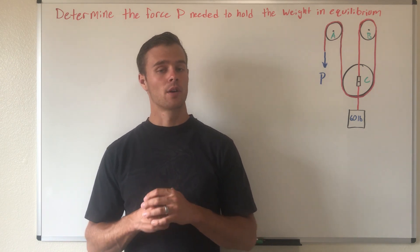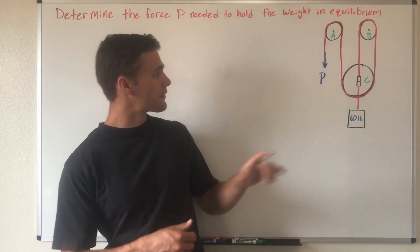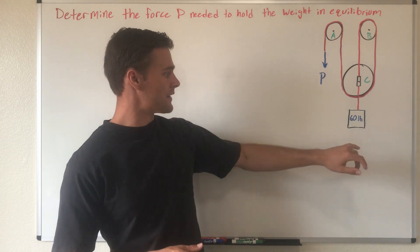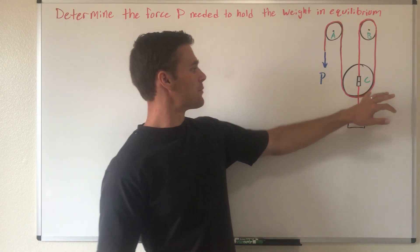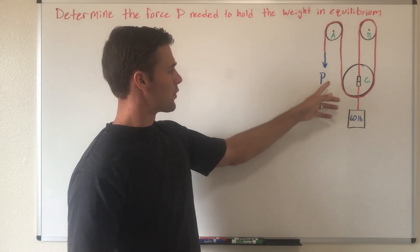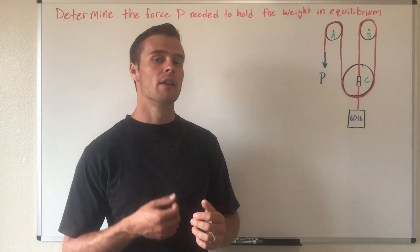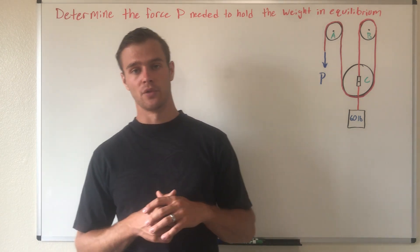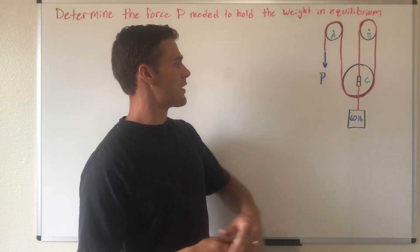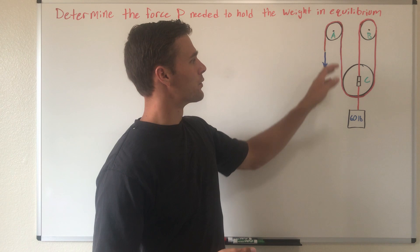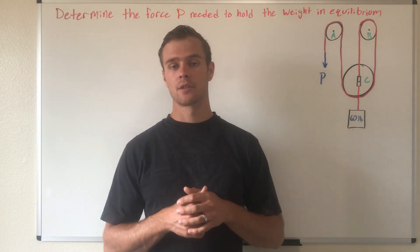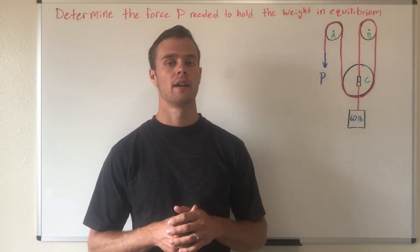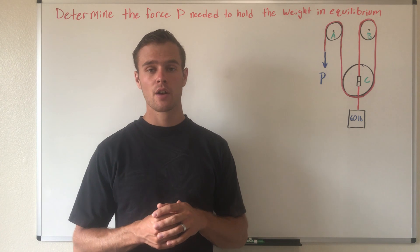That's basically it for analyzing frames and machines — it's very similar to analyzing trusses. In this example problem, we have three different pulleys, which is considered a simple machine. We have a weight hanging down from pulley C, and a force P holding the rope. We need to find what force P needs to be to hold the weight in equilibrium, meaning to keep it from moving.